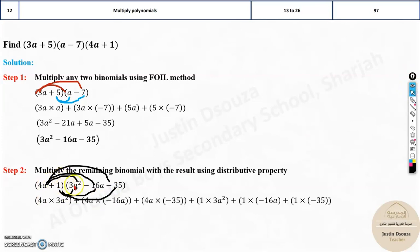Now it will be 4 times 3A squared, 4A times negative 16A, 4A times negative 35. Same with 1. 1 times 3A squared, 1 times negative 16A. And lastly, it is 1 times negative 35. Then you have to multiply this individually. It means you need to multiply the numbers together and terms separately.